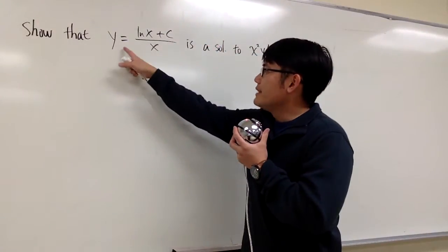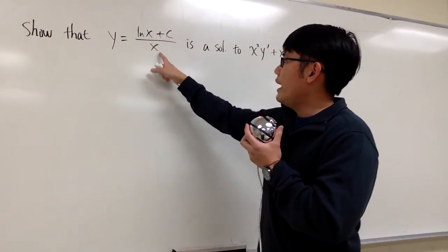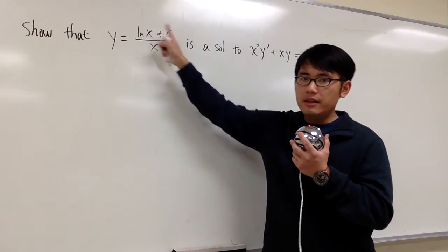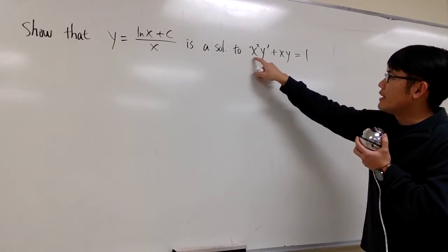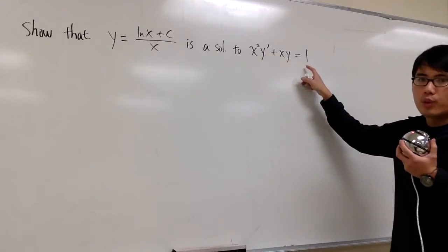Okay, we'll show that y equals ln x plus c over x, where c is just a constant. This equation is a solution to the differential equation that we have: x squared times y prime plus xy is equal to 1.